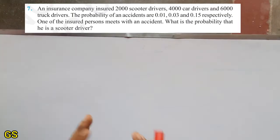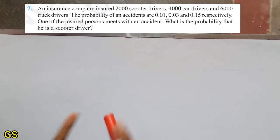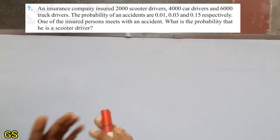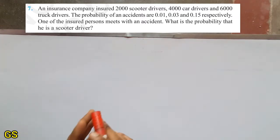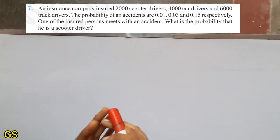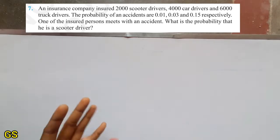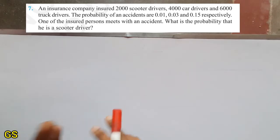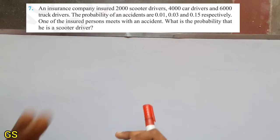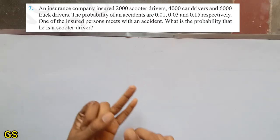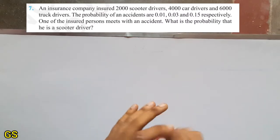So now, the 7th assignment: an insurance company insured 2,000 scooter drivers, 4,000 car drivers, and 6,000 truck drivers. So this gives us 3 cases: scooter driver, car driver, and truck driver — 3 types of drivers.